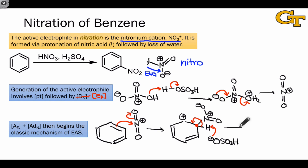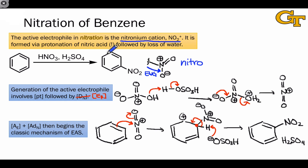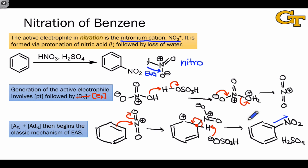This electron flow gives the final product, nitrobenzene, as well as H2SO4 as a byproduct. Because the ring is now attached to a strong electron withdrawing group, the ring is deactivated toward further electrophilic aromatic substitution — it's a very electron deficient ring. With large amounts of HNO3, long reaction times, and high temperatures, we can drive the reaction to multiple nitrations, but this takes very vigorous conditions that are going to jump out at you.